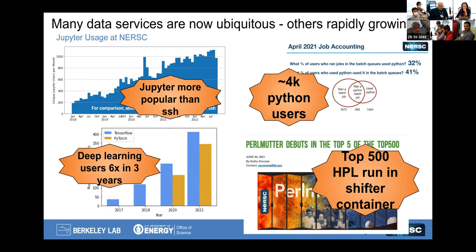With containers, we also see similar growth — hundreds of users. But perhaps even more impressively, the top 500 result that Perlmutter submitted, which put it at number five, was in fact run inside a Shifter container. These technologies really are rapidly becoming part of the mainstream.